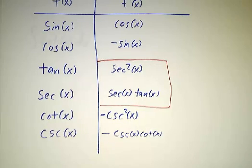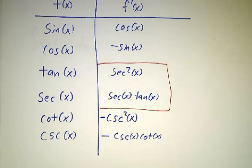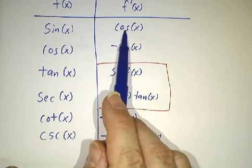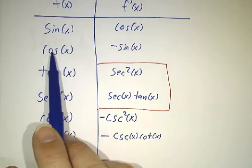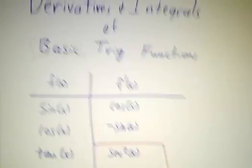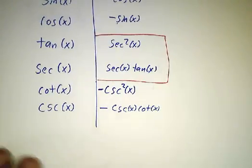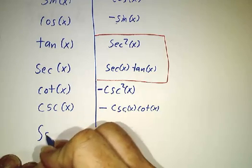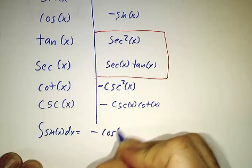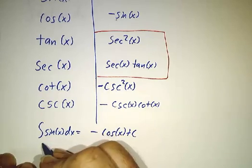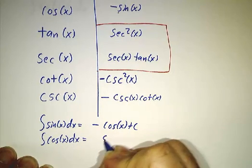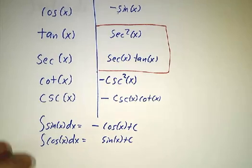Now let's start figuring out integrals. The first two integrals are really easy. The integral of sine is negative cosine because the derivative of negative cosine is sine. And the integral of cosine is sine. The integral of sine of x dx is negative cosine of x plus a constant. Integral of cosine of x dx is plus sine of x plus a constant.